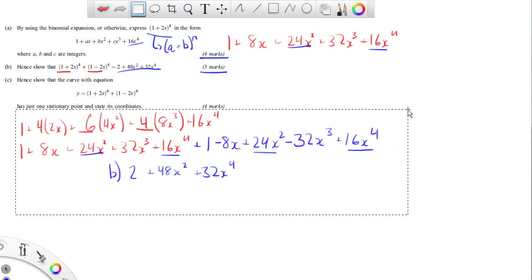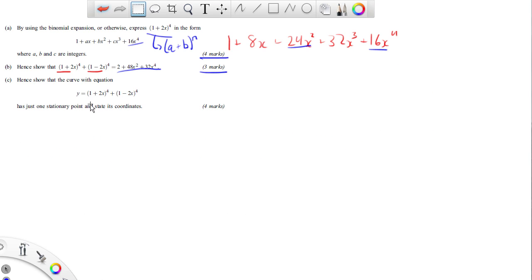So finally, for part C, we want to show that the curve, show that the curve with the equation for this has just one stationary point and state its coordinates. Look at that, a derivative problem now. So, instead of using any other type of rule, what we're going to do is, we already know that this is equal to what they show us in part B. So Y is equal to, I'm going to put this in standard form. So I'm going to put my powers in descending order. So it looks like this. It's the same thing, except last is first and first is last. And we want to find a stationary point and state the coordinates.